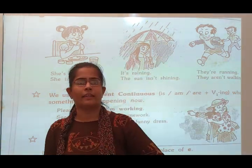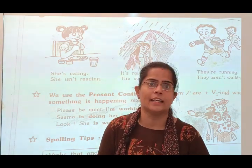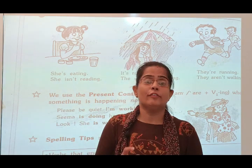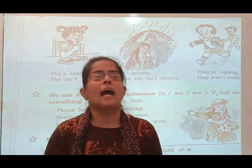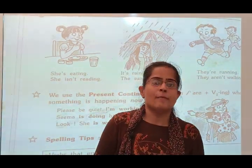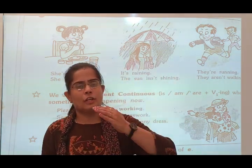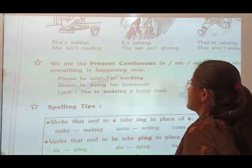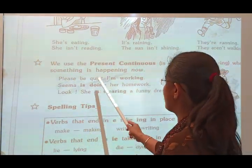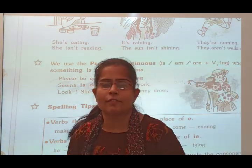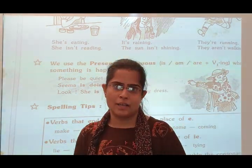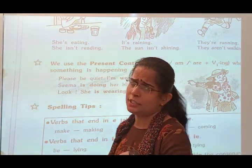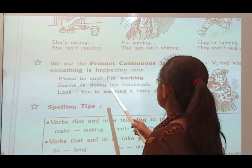We use the simple present continuous tense when something is happening now — when we talk about something right now, this action is starting. In that situation we use present continuous tense. For example, 'Please be quiet, I am working.' Here someone says please be quiet, I am working — that means the working action is ongoing right now. Another example: 'Sima is doing her homework' — Sima's homework action is continuing right now.